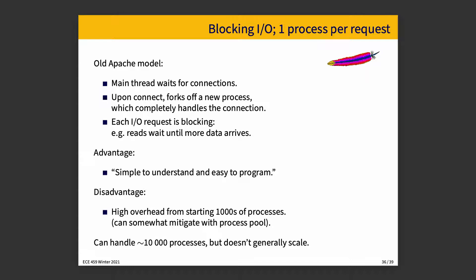Once the request is handled, the process can exit. Each I/O request is blocking — reads wait until more data arrives. It's simple to understand and easy to program, but there is very high overhead from starting lots and lots of processes. This will eventually not scale because there are limits on how many processes you can spawn. The number of processes can run out much quicker than the number of threads would. This was done in the old Apache model because it was the best that people knew to do at the time, not because it's necessarily the best overall.